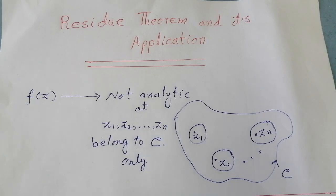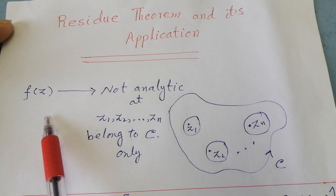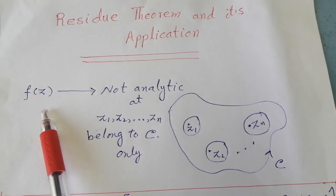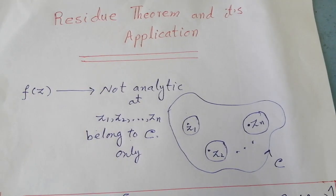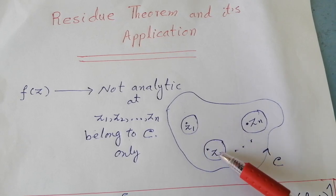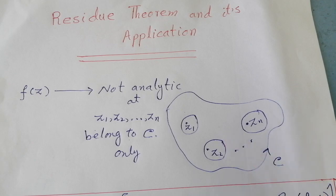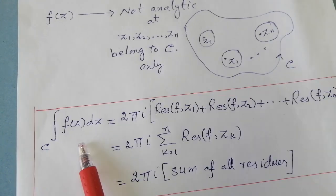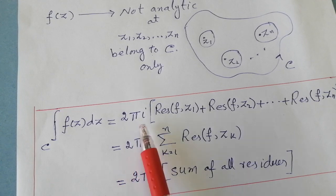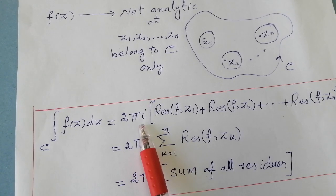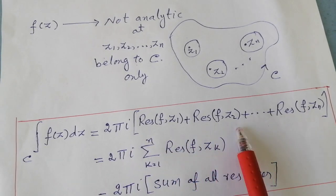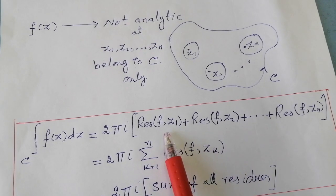Bismillahirrahmanirrahim. Assalamu alaikum. In my previous video lecture, we studied that if we are given a function f(z) which is not analytic only at a finite number of points inside a closed curve, then the integration of that function is equal to 2πi times the sum of all the residues of that function at its singular points.